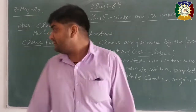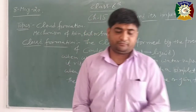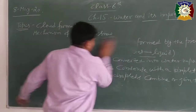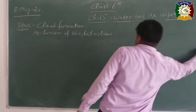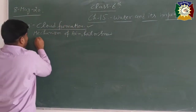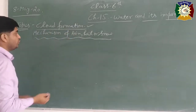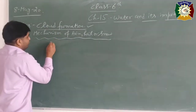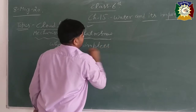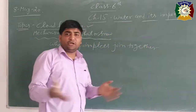Now, what is the mechanism of rain, hail, and snow? It is also related to this process. As you know, tiny droplets join together and form a heavy droplet.